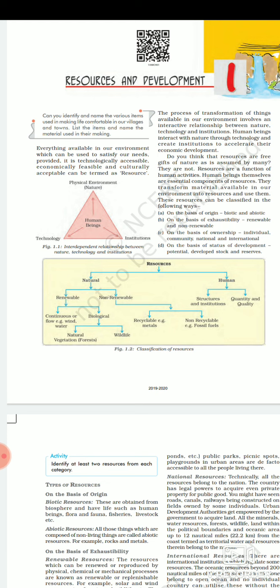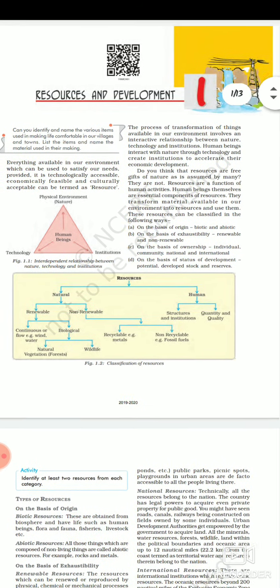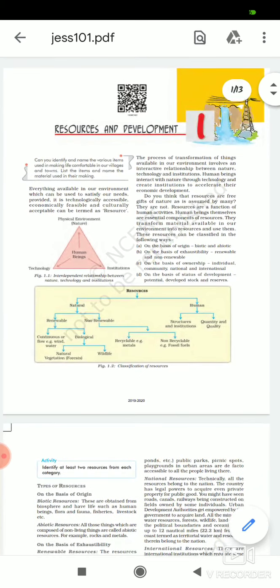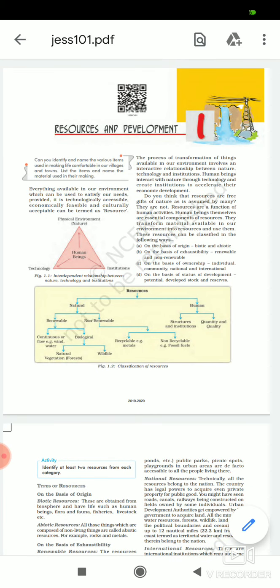The process of transformation of things available in our environment involves an interactive relationship between nature, technology, and institutions. Human beings interact with nature through technology and create institutions to accelerate their economic development.